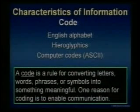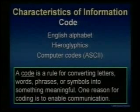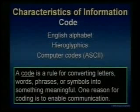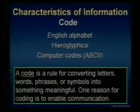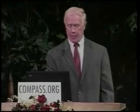A code is a rule for converting letters, words, phrases, or symbols into something meaningful. One reason for coding is to enable communication. So a code is very important to having information — that's one of the attributes or characteristics of information.